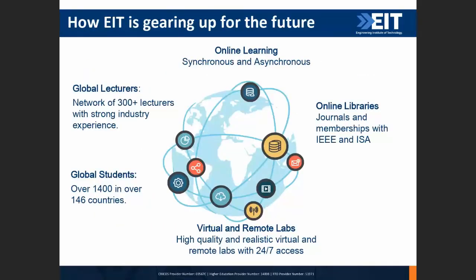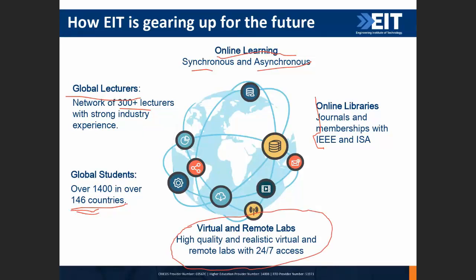A quick brief about EIT — Engineering Institute of Technology. EIT is gearing up for future technologies such as digital twin and the fourth industrial revolution. We've been running online courses using both synchronous and asynchronous technologies to deliver courses throughout the world. We have a global lecturer pool of 300 plus lecturers from everywhere — Canada, US, Spain, New Zealand, Australia. A huge number of students from 146 plus countries are currently studying with EIT. We have huge online library resources and virtual and remote labs. We run bachelor's, master's, and doctorate courses in mechanical, electrical, automation, and civil engineering.